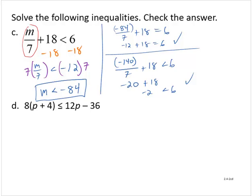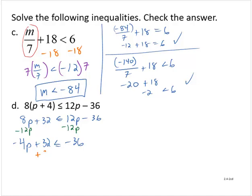Exercise d: 8 times the quantity p plus 4 is less than or equal to 12p minus 36. Apply the distributive property: 8p plus 32 is less than or equal to 12p minus 36. Let's get all the variable terms to one side by subtracting 12p from both sides, yielding negative 4p plus 32 is less than or equal to negative 36. Then subtracting 32 from both sides gives negative 4p is less than or equal to negative 68. Dividing through by negative 4 — notice I'm dividing by a negative number, so I flip the symbol of inequality to greater than or equal to — giving p is greater than or equal to positive 17.